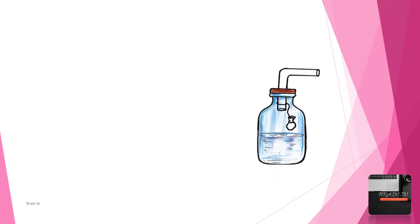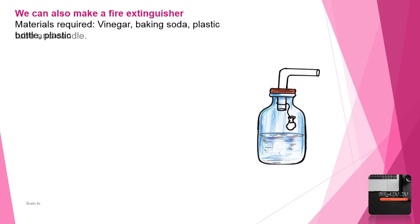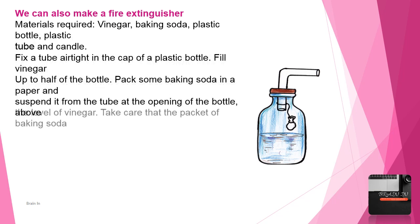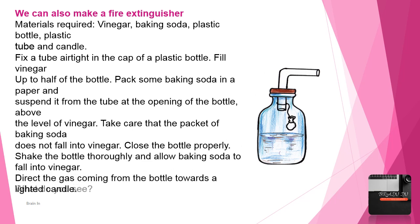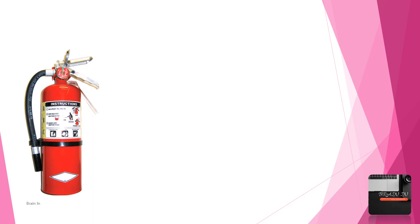We can also make a fire extinguisher. Materials required: vinegar, baking soda, plastic bottle, plastic tube, and candle. Fix a tube airtight in the cap of a plastic bottle. Fill vinegar up to half of the bottle. Pack some baking soda in a paper and suspend it from the tube above the level of vinegar. Close the bottle properly. Shake the bottle thoroughly, allowing baking soda to fall into vinegar. Direct the gas coming from the bottle towards a lighted candle. Vinegar is acetic acid and baking soda is sodium bicarbonate; when they react, carbon dioxide is formed. The fire extinguisher works on this principle. Include the experiment notes in your science diary.